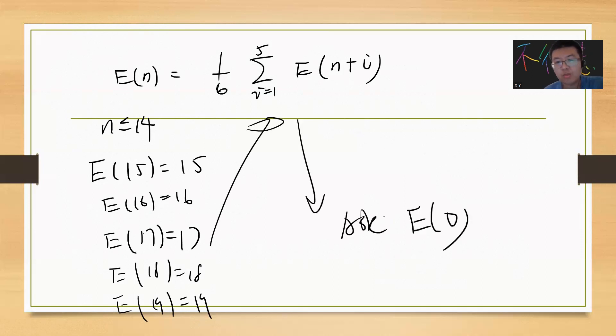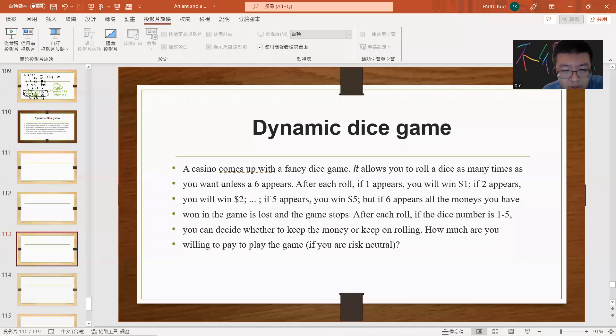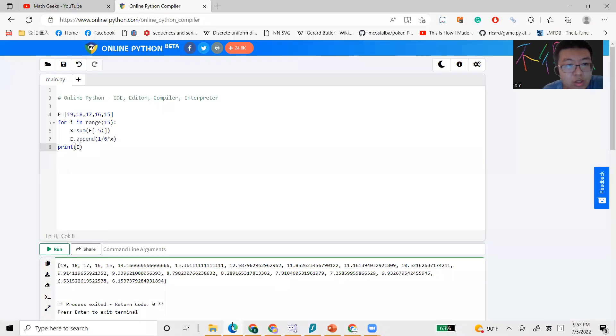Suppose you don't have any money initially. This is very simple - you just connect everything in the summation. You can write code. I wrote the code before, so it's here. You start from 19, 18, 17, 16, 15. It's a very simple Python code. You go through range(15) and then you sum over the final five numbers, divide by six, and add it to the previous.